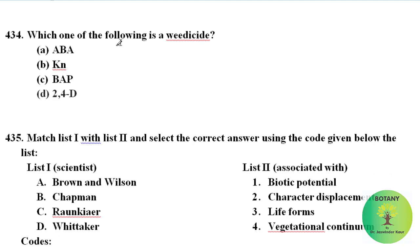Which one of the following is a herbicide? Among these, 2,4-D is the herbicide. The full form of 2,4-D is 2,4-dichlorophenoxyacetic acid.